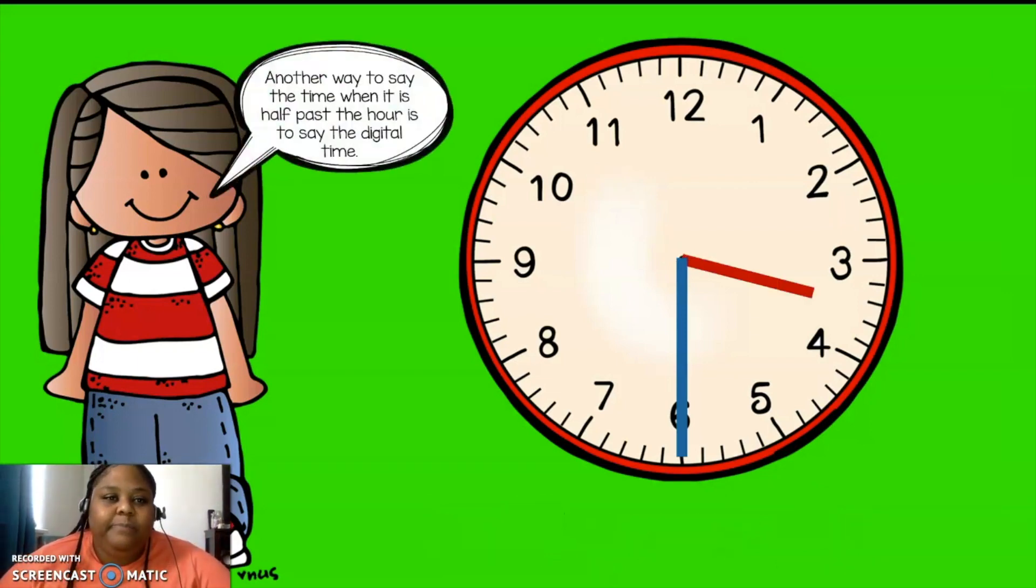Here's another clock. Another way to say the time when it is half past the hour is to say the digital time. So remember, there are two kinds of clocks. One clock is a digital clock. Another kind of clock is the analog. And what we're looking at now is the analog.